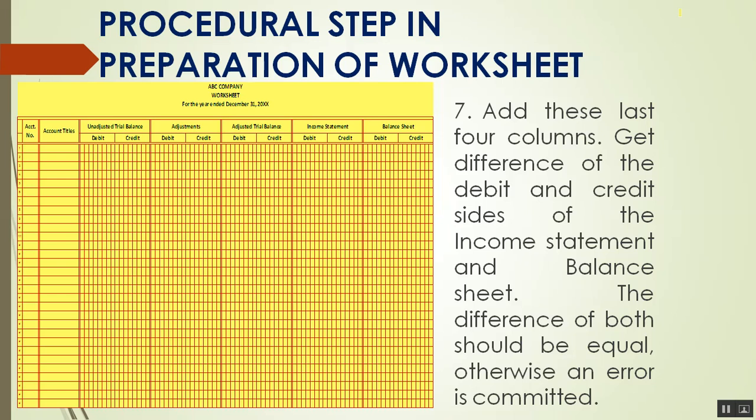After adding the four columns, get the difference of the debit and credit sides of the income statement and the balance sheet. The difference of both should be equal; otherwise, an error has been committed.